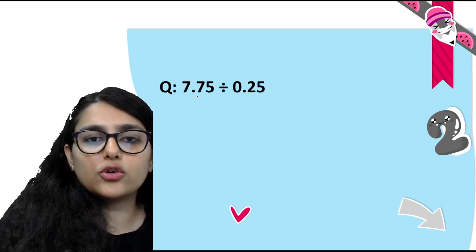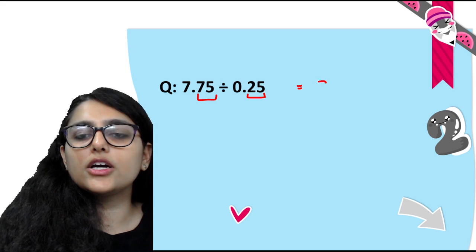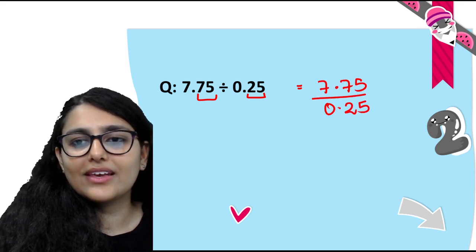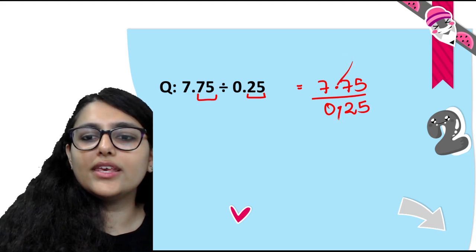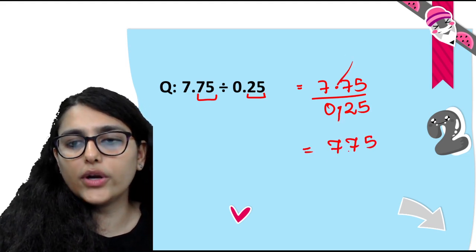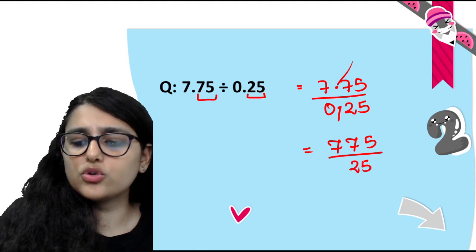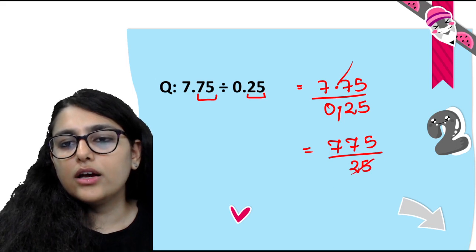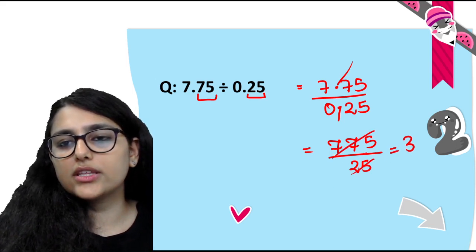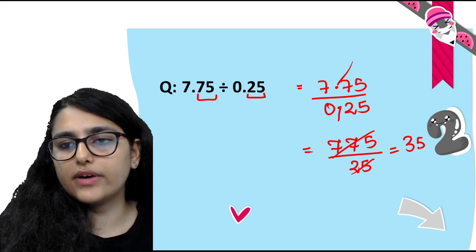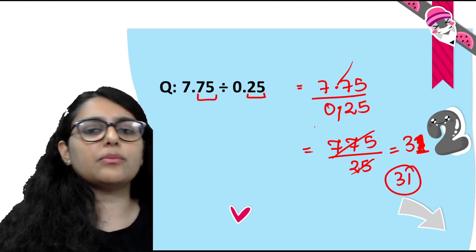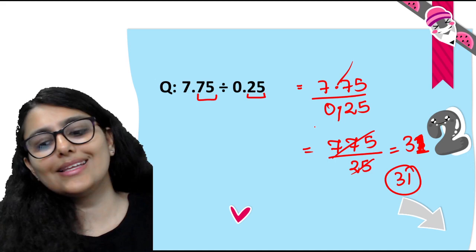Same number of digits after the decimal again: 7.75 ÷ 0.25. Since both have the same number of decimal places, eliminate the decimals: 775 ÷ 25. Dividing: 25 × 3 = 75, bringing down gives 25, 25 × 1 = 25. So the answer is 31. No need to convert to fractions in this case.